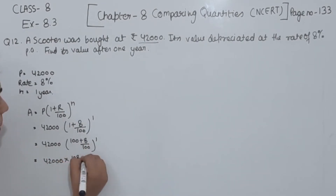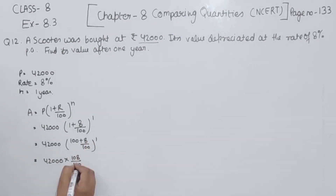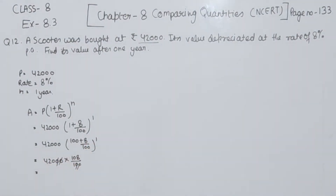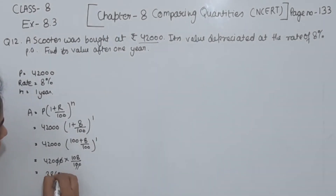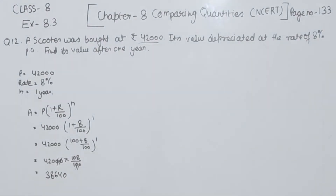Now we multiply: 42,000 × 108 / 100. Two zeros cancel from two zeros. Multiplying the remaining amounts, we get the amount equal to rupees 38,640.